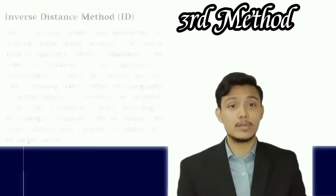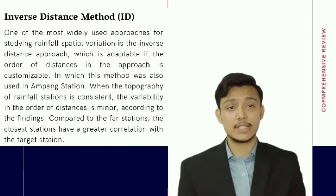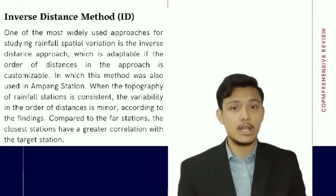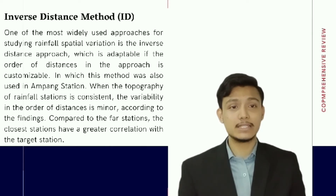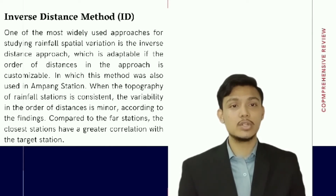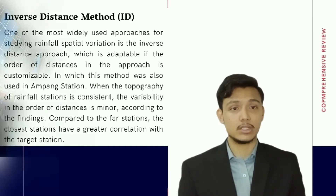One of the most widely used approaches for studying rainfall spatial variation is the inverse distance approach, which is adaptable if the order of distances in the approach is customizable. This method was also used in Ompang Station.